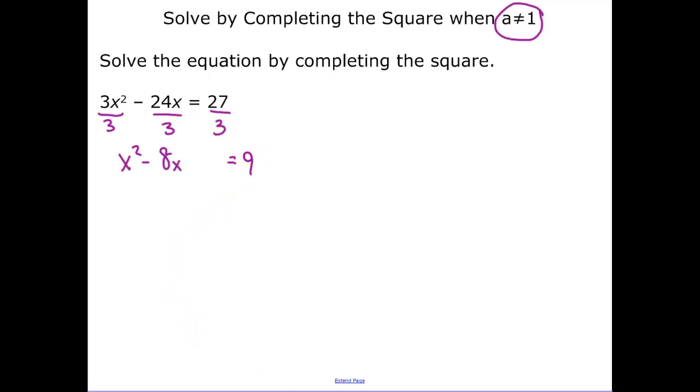So now we have to add in a number on the left and the right side that completes our square. So I take 8 divided by 2 and I square that. That's 4 squared, 16. So I add 16 to both sides.